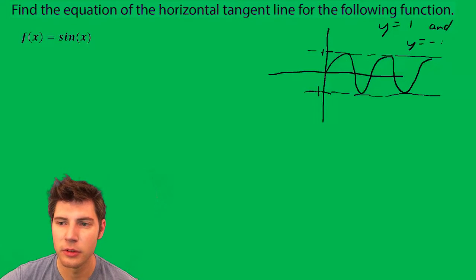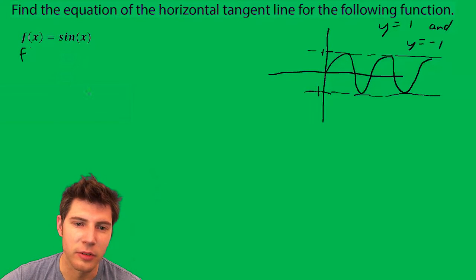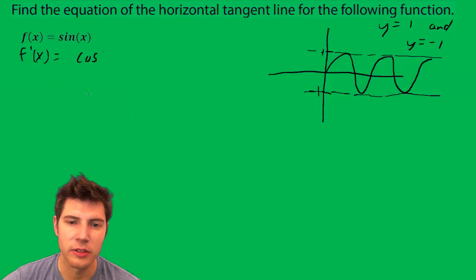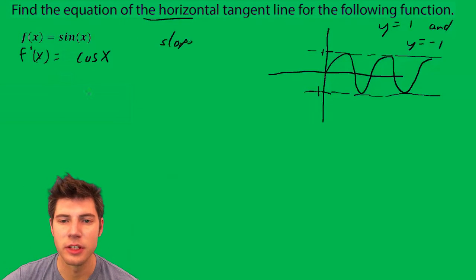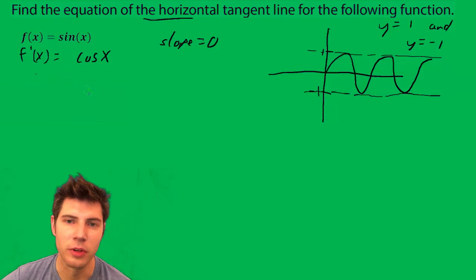So first thing we want to do is take the derivative. So f'(x) equals cosine of x. Then since it's horizontal, we know the slope needs to equal zero, so we set the derivative equal to zero.